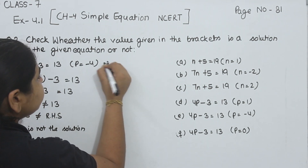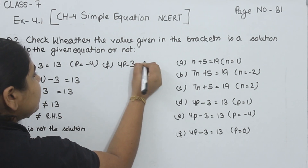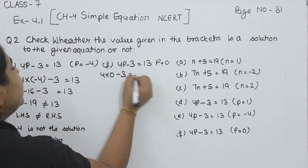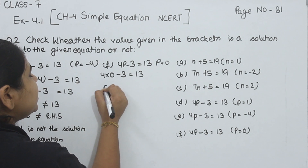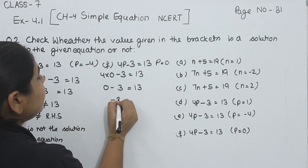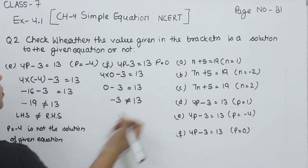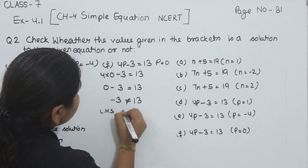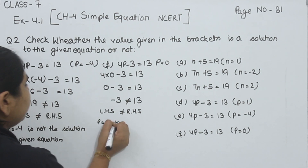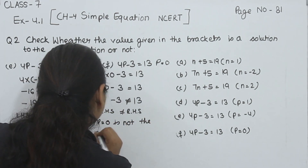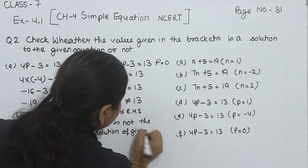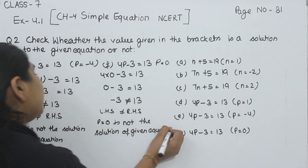Now part F. 4P minus 3 is equal to 13, where P is equal to 0. Now 4 multiplied by 0 minus 3 is equal to 13. 4 multiplied by 0 is 0, so 0 minus 3 is equal to 13. Now 0 minus 3 is minus 3, which is not equal to 13. So left hand side is not equal to right hand side. P is equal to 0 is not the solution of the given equation.